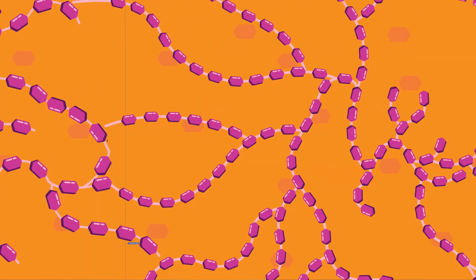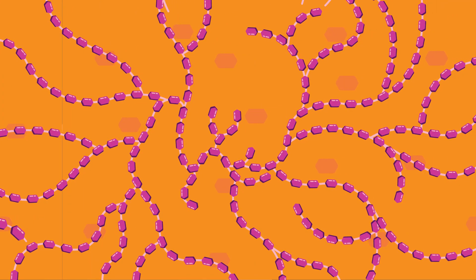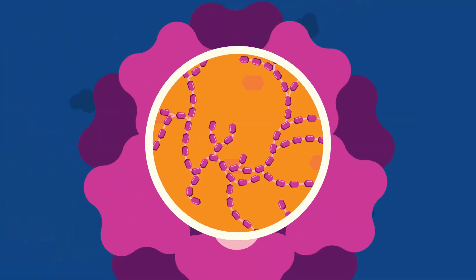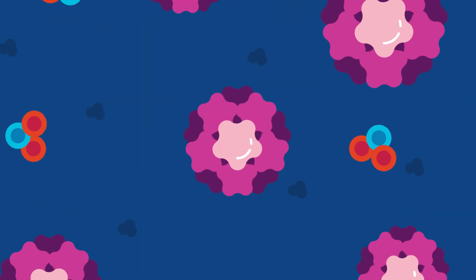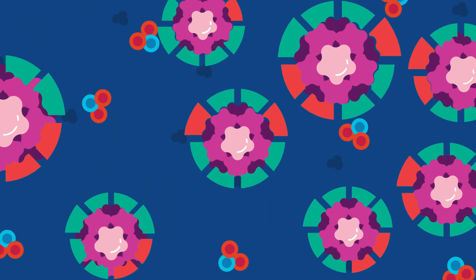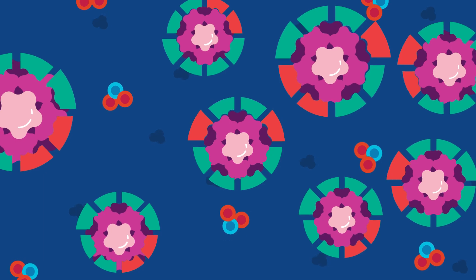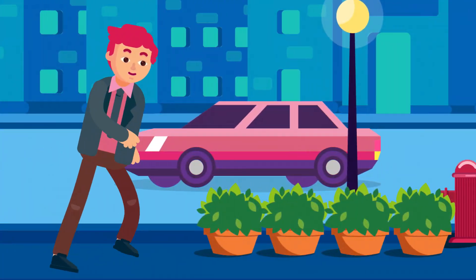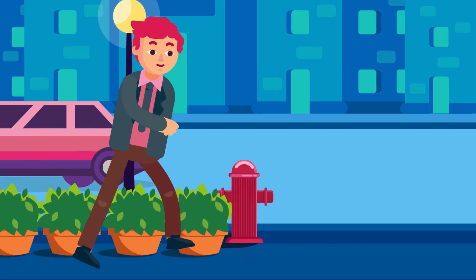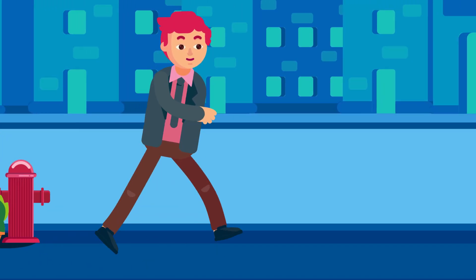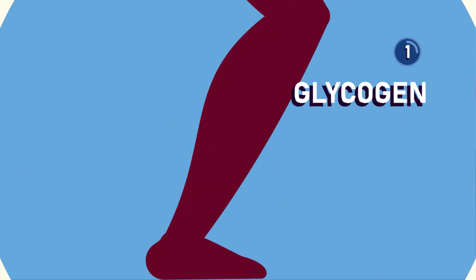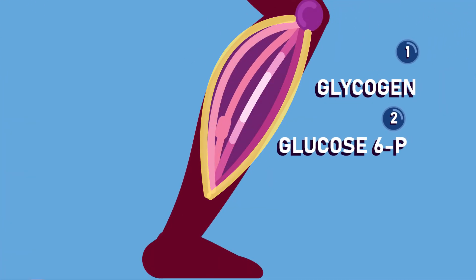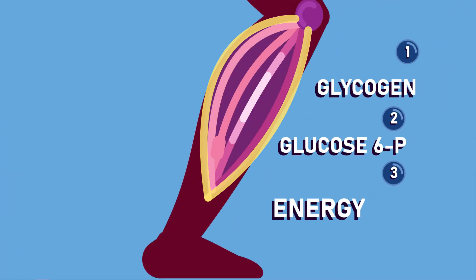Glycogen and starch are suitable as storage materials for many reasons. They are large and insoluble in water, so they do not change osmotic pressure in the cells. Due to their large size, they are unable to diffuse through the cell membrane and can easily be hydrolyzed when needed.